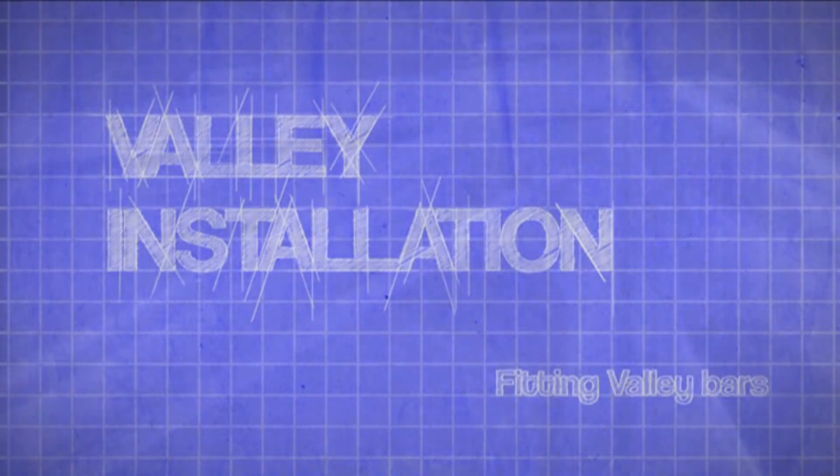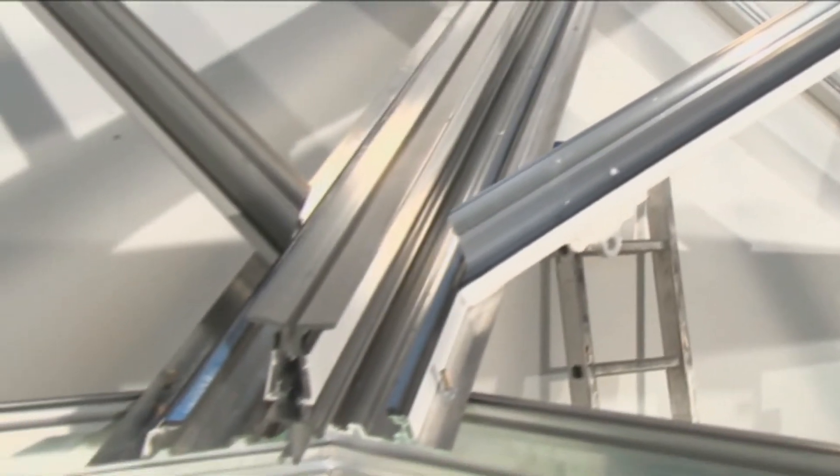Fitting valley bars. The valley bars run from the wall plate and into the valley. They are cut at an angle along the bottom face.